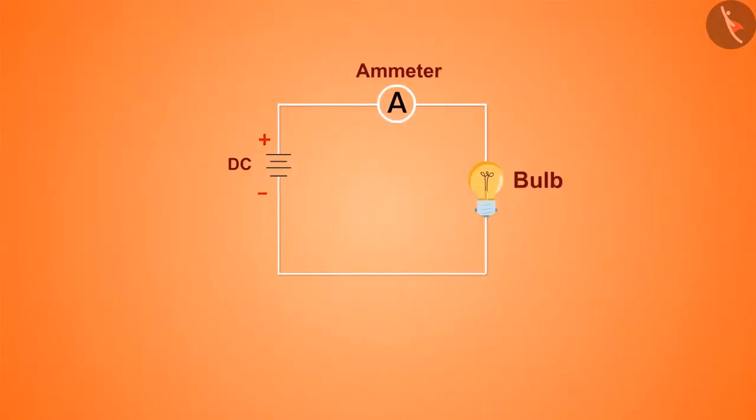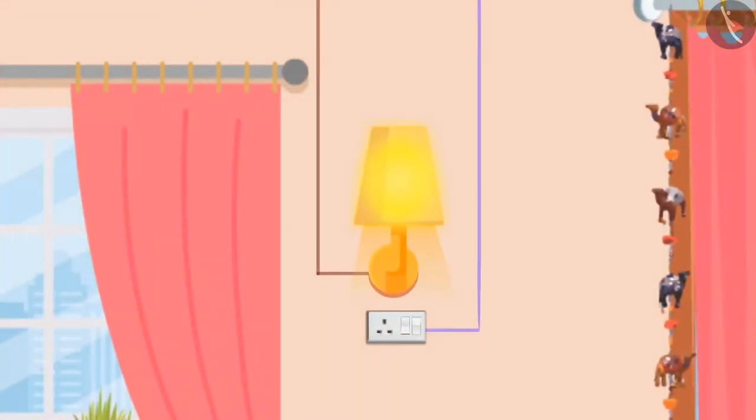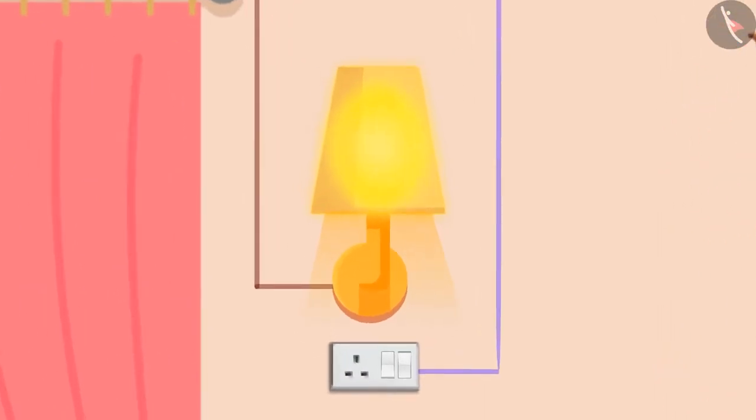Do you know a similar type of circuit is present in our homes too? But here the positive and the negative wires are not connected to the battery but are connected to the power supply coming into the house. We will know more closely about this in the upcoming videos.